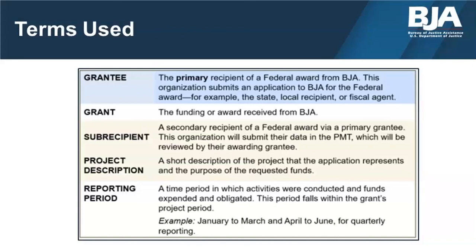For example, the New Jersey State Administrating Agency received a grant from BJA, making them a grantee. They used some of the money to fund their project activities and subaward funding to a local law enforcement organization, making that organization a subrecipient. The outline of BJA-funded activities conducted by both the grantee and subrecipient should be captured in the grantee's project description. Data collected should be reported for each quarterly reporting period that the grant is active.